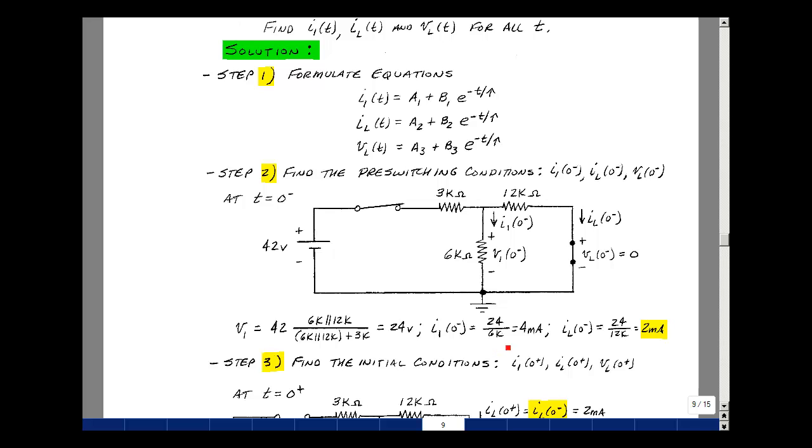So dividing 24 by 6k, I get 4 milliamps. 24 by 12k, I get 2 milliamps.